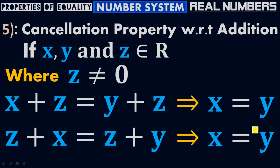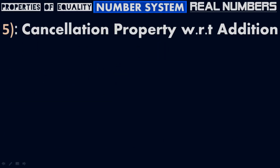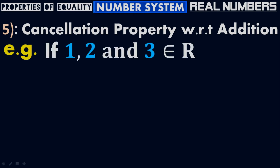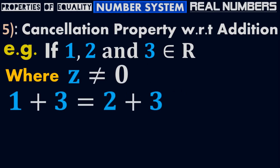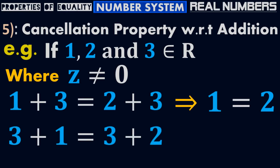Let me prove it mathematically with an example. If I have 1, 2, and 3 belonging to real numbers where z is not equal to 0, then 1 plus 3 equals to 2 plus 3, which implies that 1 equals to 2. Similarly, 3 plus 1 equals to 3 plus 2, which implies that 1 equals to 2.